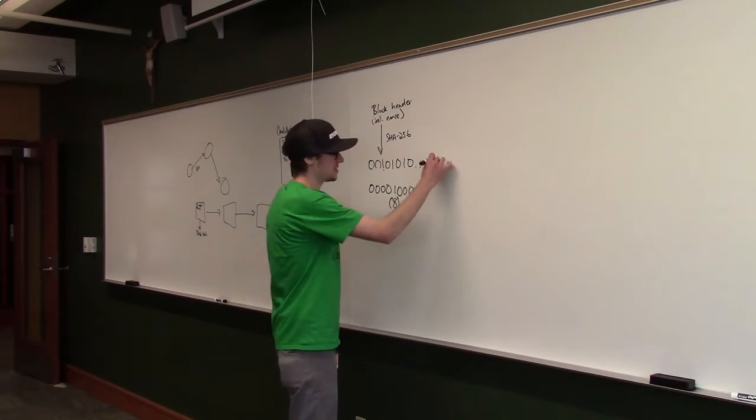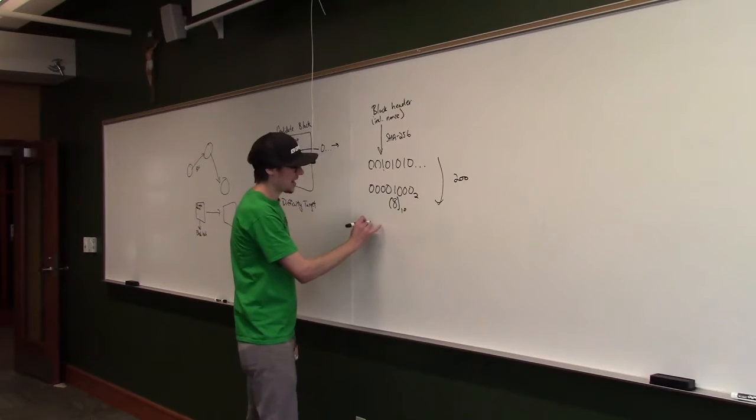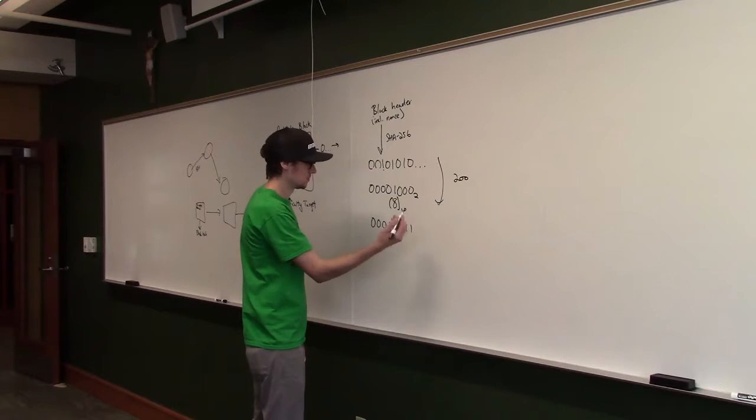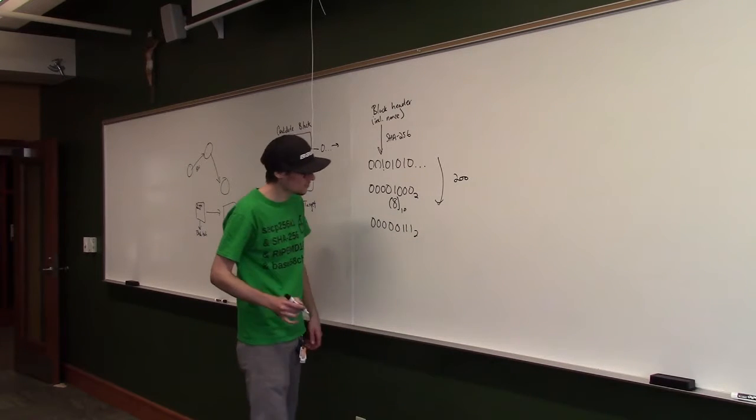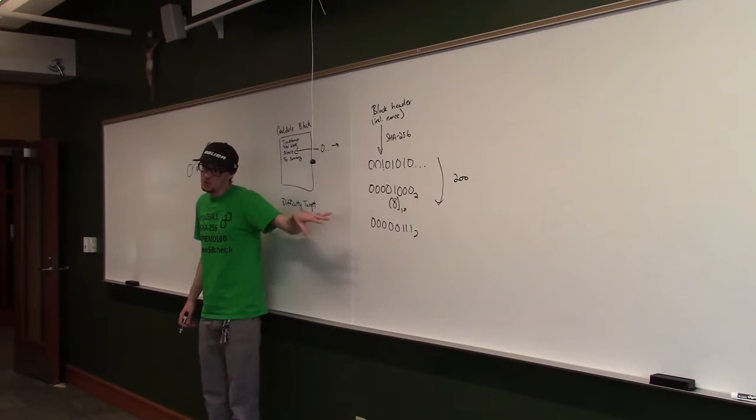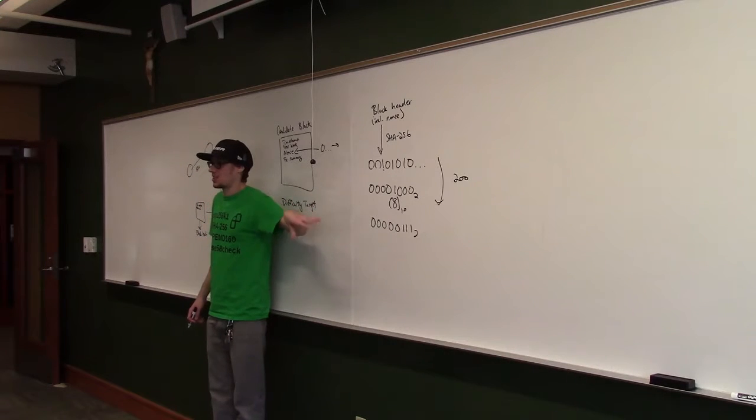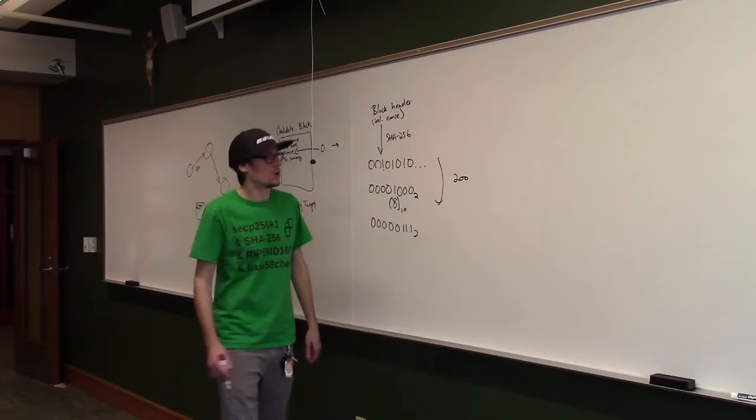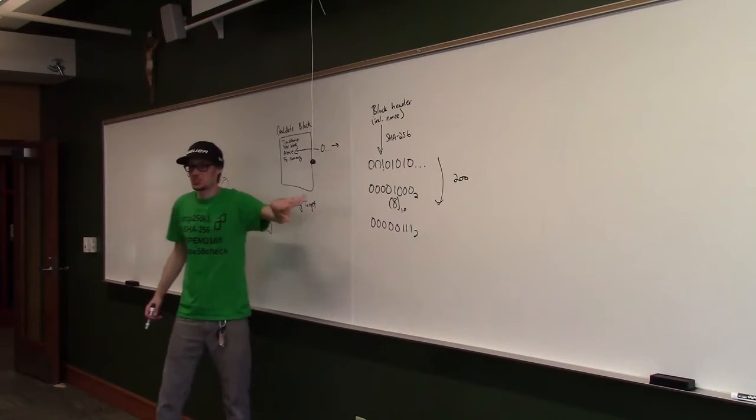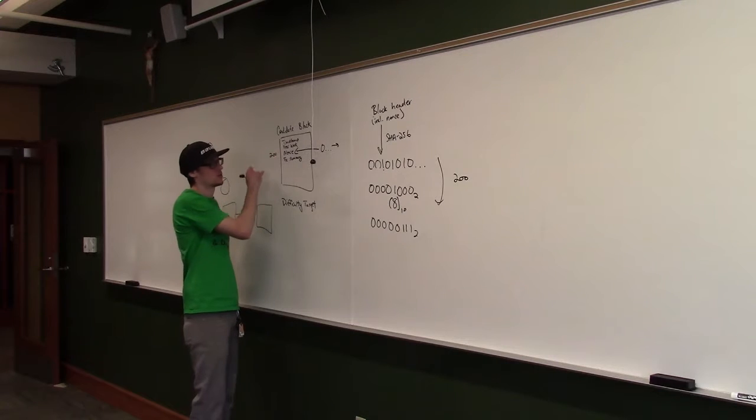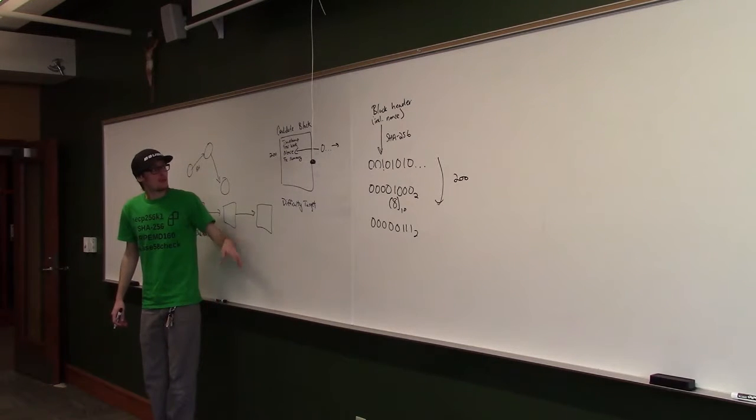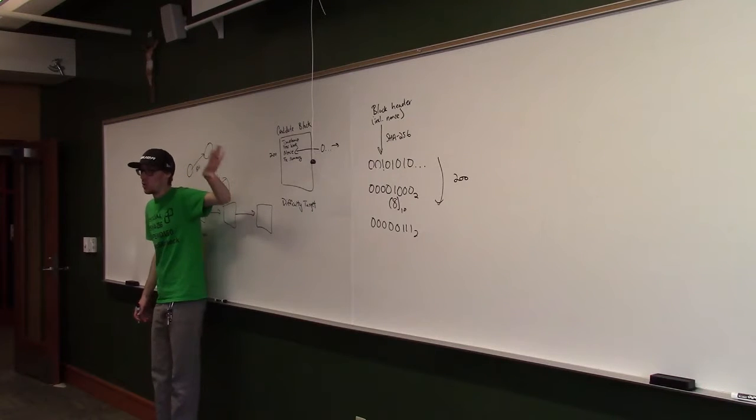Let's say it takes us 200 guesses down the road and we get a hash output that is 00000111. So now our miner has solved the block. That's the terminology they use. The miner found a guess that gives us a hash output that is less than our difficulty target. So the miner now has a block with all this transaction data. It has a nonce that solves this problem. Let's just say this nonce happens to be 200, right? We had 200 guesses, or 201, but close enough.